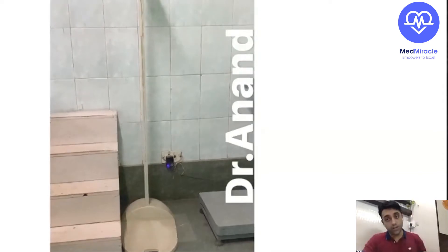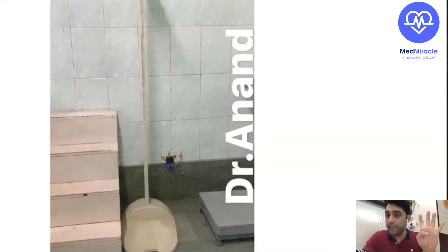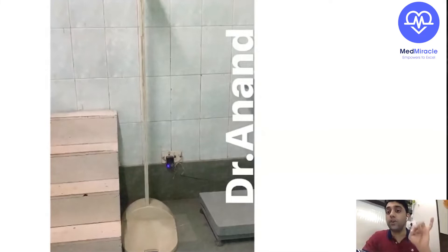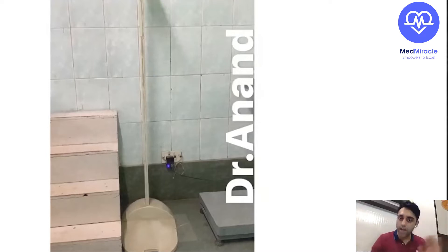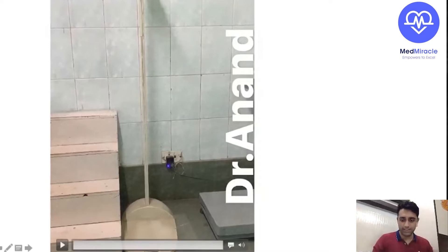In this class we have covered around five questions: we saw the infantometer, the stadiometer, Duchenne muscular dystrophy, IV cannulas and their sizes, and the phototherapy unit. These were the top five recent questions which came in exams. Now, what is this next instrument? What do you call this caliper? This is nothing but a Harpenden caliper, used to know the caloric reserve of the body and body fat.